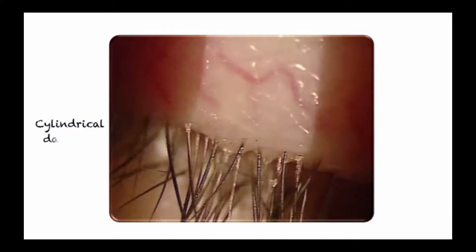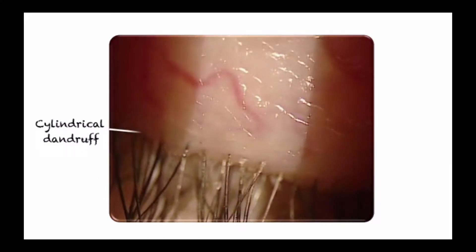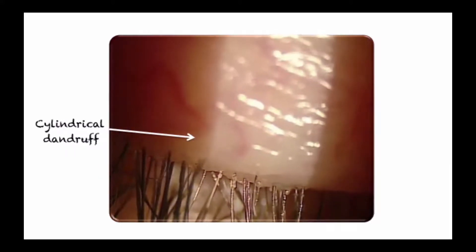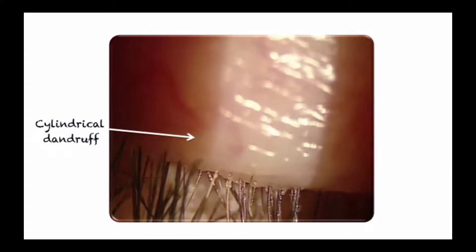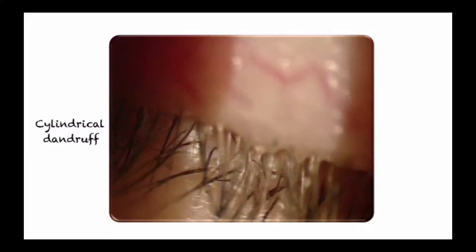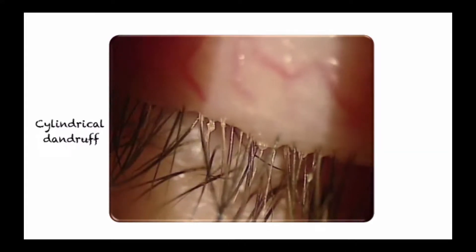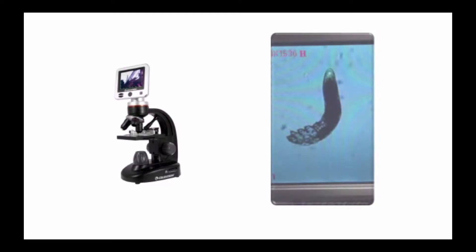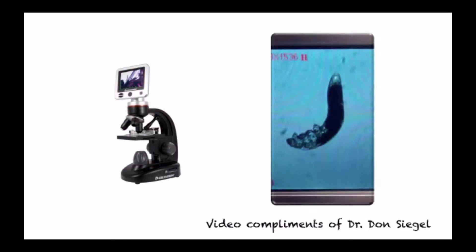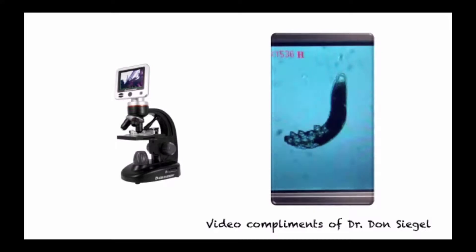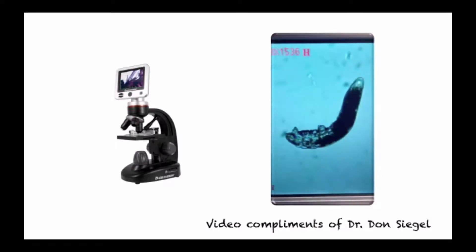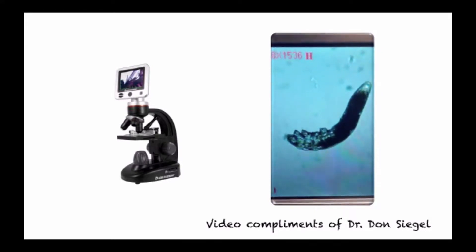The definitive way to diagnose demodex blepharitis is to epilate several lashes from each of the eyelid margins, then place them on a slide and view them with a traditional light microscope looking for the presence of demodex mites. The reality is that most practitioners don't have access to a light microscope, and even if available, it can actually be a time-consuming procedure.